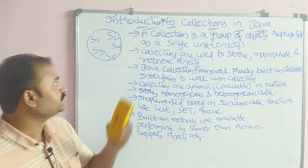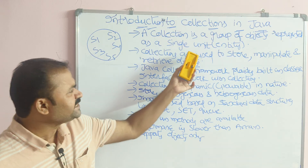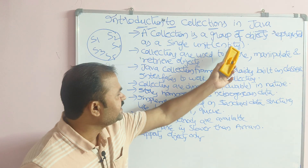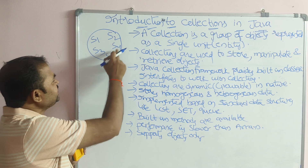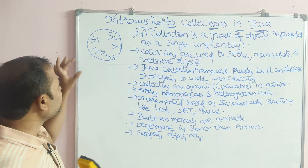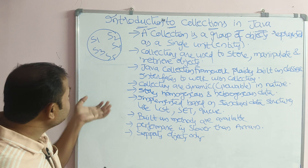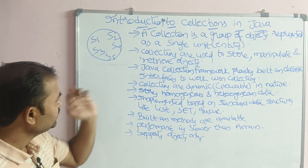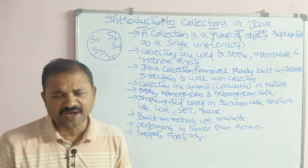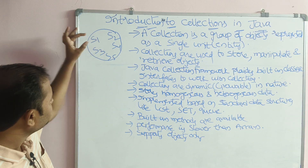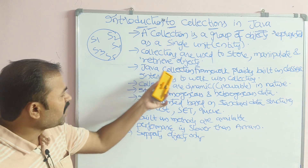A collection is a group of objects represented as a single unit, that is, a single entity. For example, a collection containing five objects s1, s2, s3, s4, and s5 allows us to perform operations on all five objects under a single unit. Collections are used to store, manipulate, and retrieve objects.